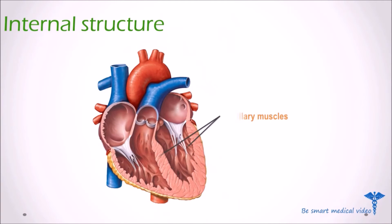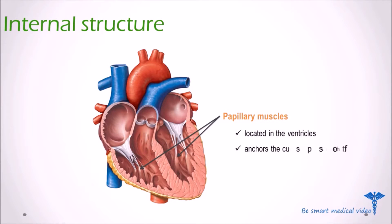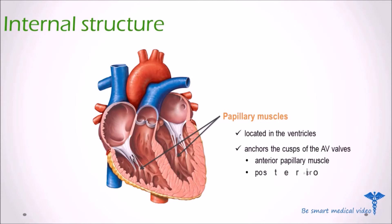Next are the papillary muscles. The papillary muscles are located in the ventricles of the heart and anchor the cusps of the atrioventricular valves. Each ventricle has an anterior and a posterior papillary muscle. Papillary muscles are five in total number.